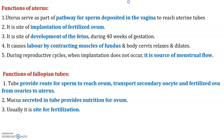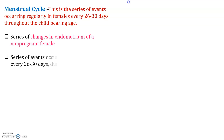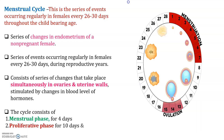Now the very important next part: what is the menstrual cycle? It is a series of events occurring regularly in the female ovary every 26 to 30 days throughout the child-bearing age. The menstrual cycle spans 28 days total: the menstrual phase is 4 days, the proliferative phase is 10 days, and the secretory phase is 14 days.